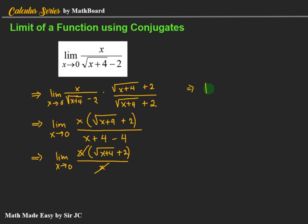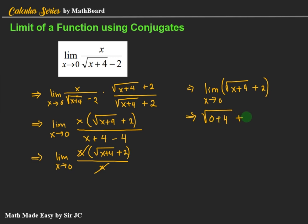We now have the limit of (√(x + 4) + 2) as x approaches 0. By direct substitution, that is √(0 + 4) + 2 = √4 + 2 = 2 + 2 = 4. So the limit of the given function equals 4.